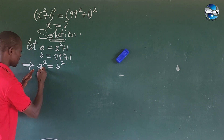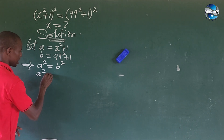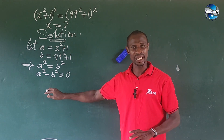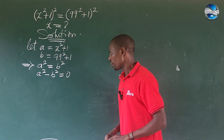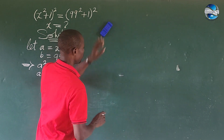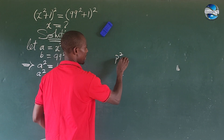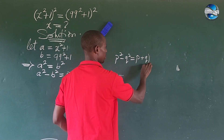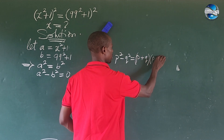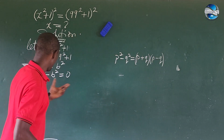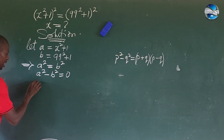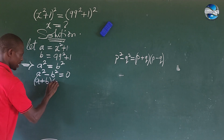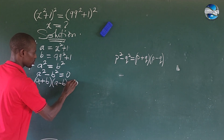We move this to this side of the equation, so we're going to have a squared minus b squared equal to 0. When you see a thing like this, what comes to mind is the difference of two squares. We recall that p squared minus q squared equals (p plus q)(p minus q). We can apply that rule here, so we get (a plus b)(a minus b) equal to 0.